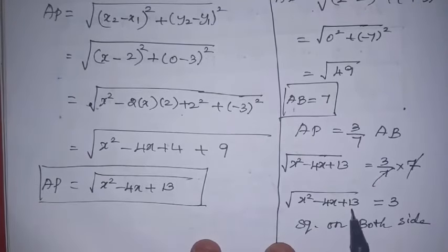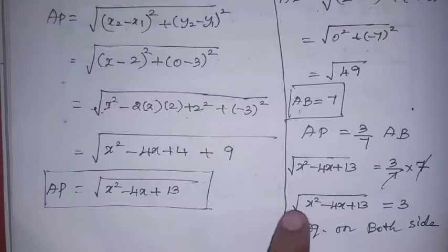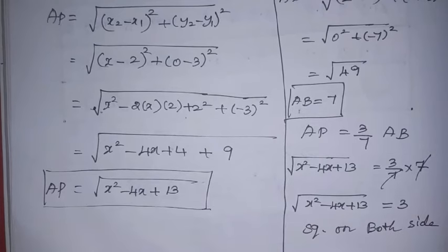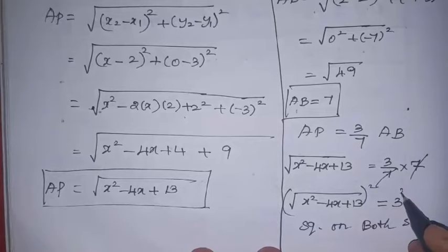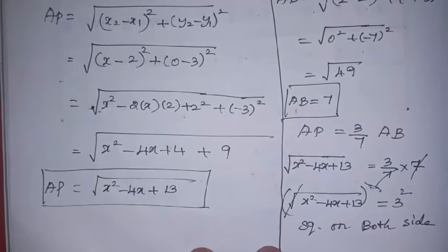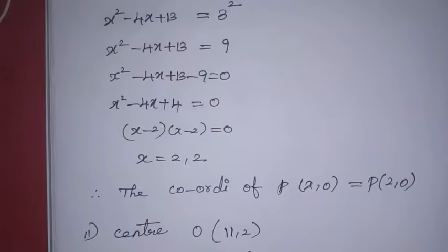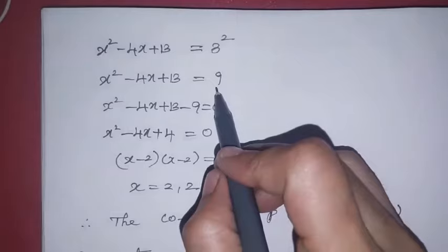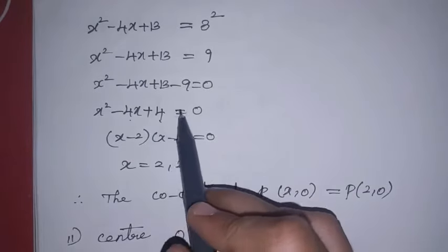The 7s cancel, giving √(x² − 4x + 13) = 3. Squaring both sides: x² − 4x + 13 = 9. Simplifying: x² − 4x + 13 − 9 = 0, which gives x² − 4x + 4 = 0.